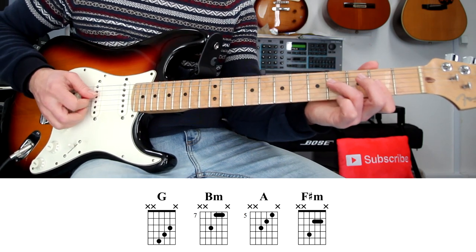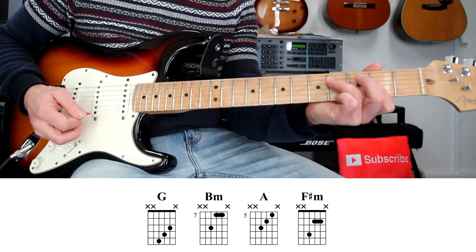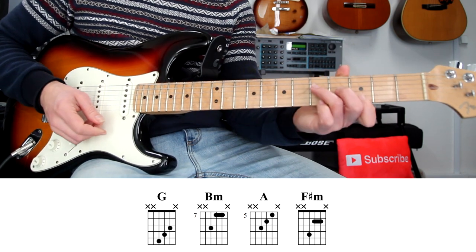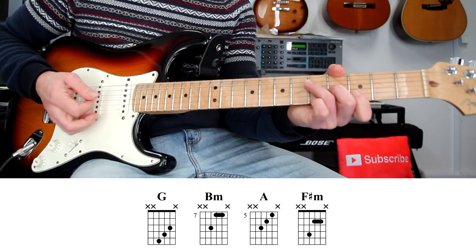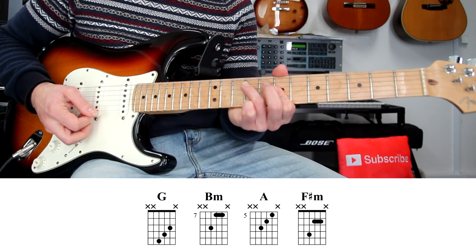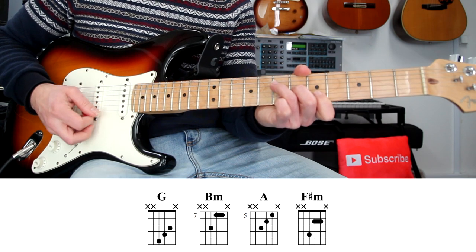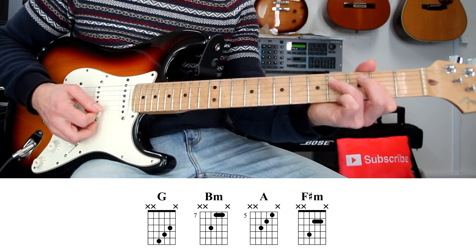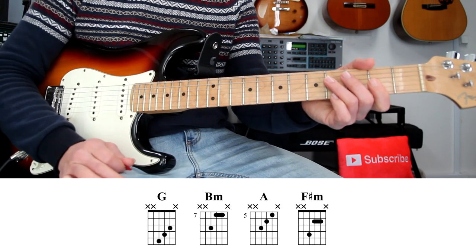And then another minor chord, here on second position. Fingers 3, 1, and 1. So get used to these chords on the left hand. Once again, G major, B minor, A major, and F sharp minor. It's pretty simple, pretty easy.